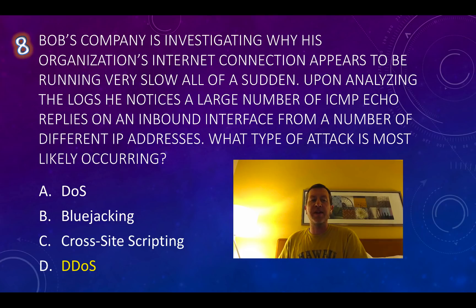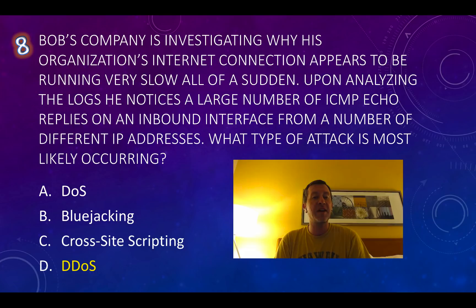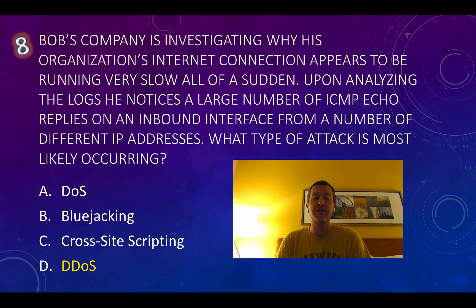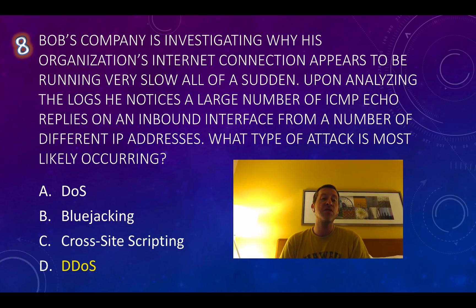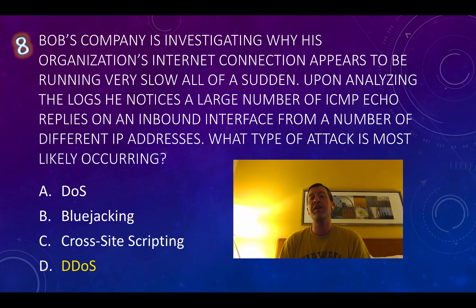Bob's company is investigating why his organization's internet connection appears to be running very slow all of a sudden. Upon analyzing the logs, he notices a large number of ICMP echo replies on an inbound interface from a number of different IP addresses. What type of attack is most likely occurring? A DoS is a denial of service. Bluejacking is a Bluetooth attack. Cross-site scripting also isn't going to cause a large number of ICMP echo replies — but a distributed denial of service, or DDoS attack, is where we could potentially see a large number of ICMP echo replies coming into our network.